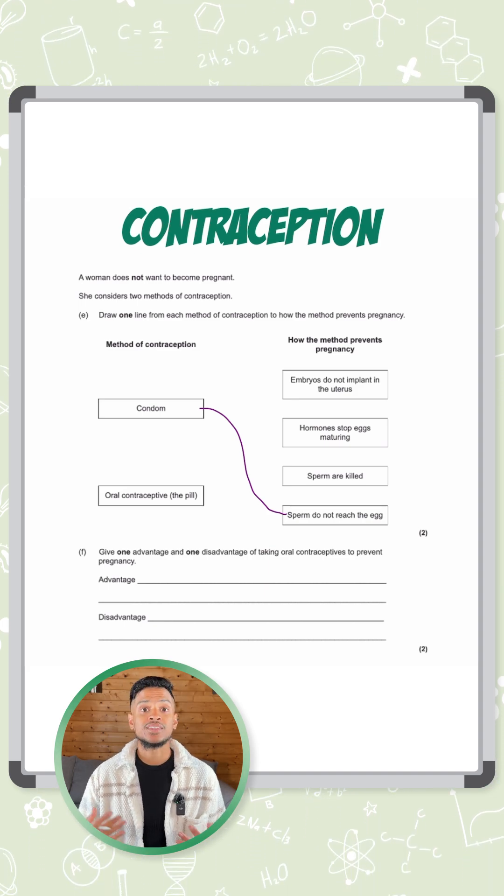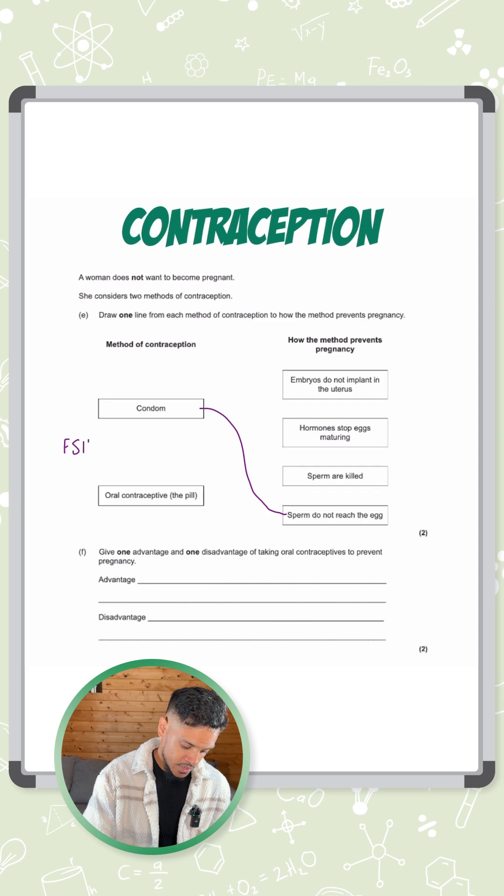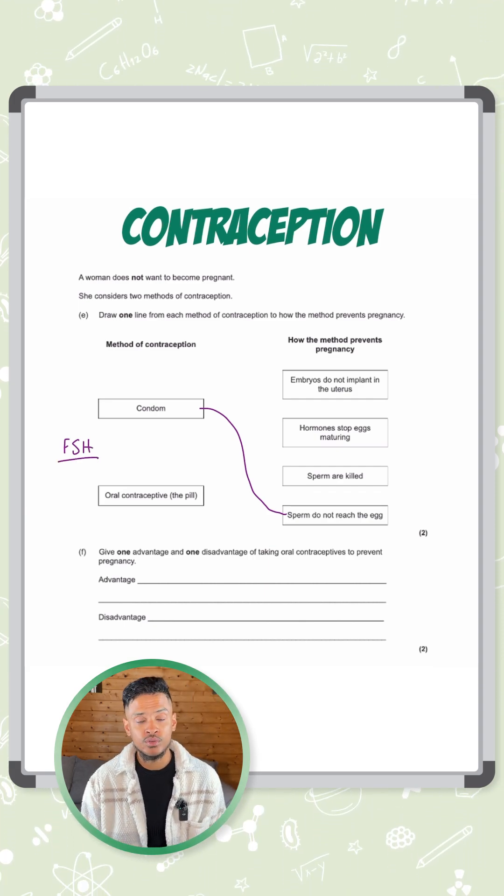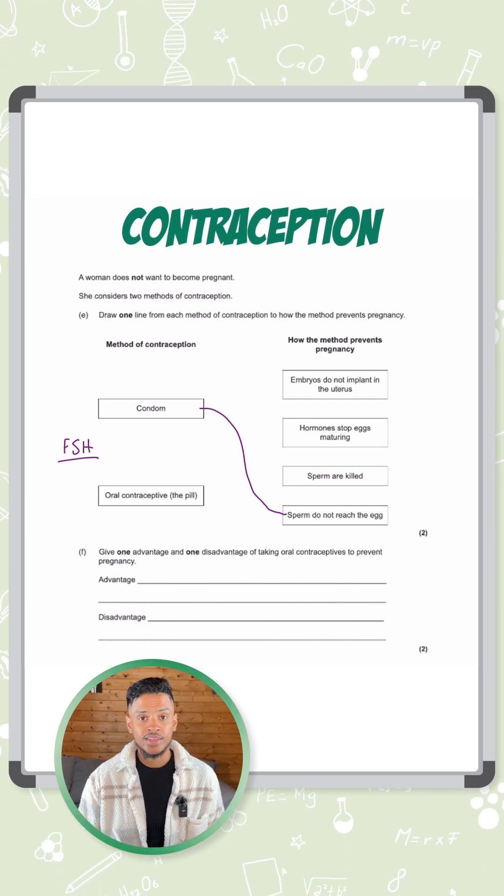It does the opposite because what it does is it also inhibits the release of FSH, follicle stimulating hormone. So what FSH is meant to do is cause the egg to grow and mature so that it can be released.